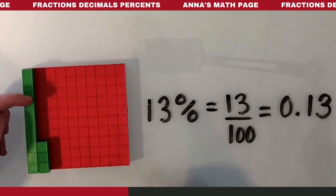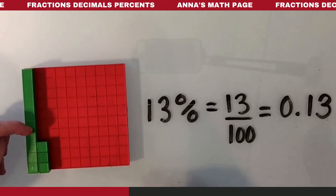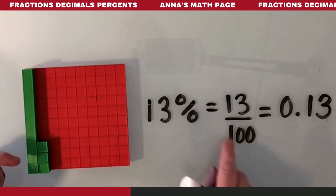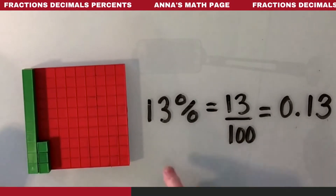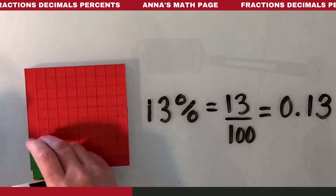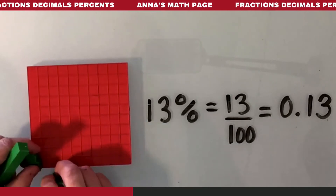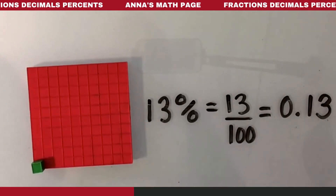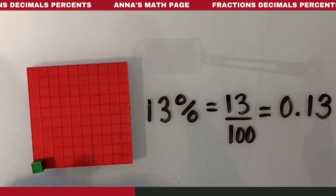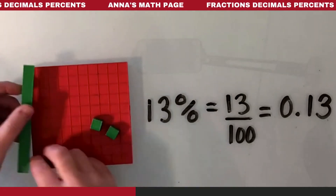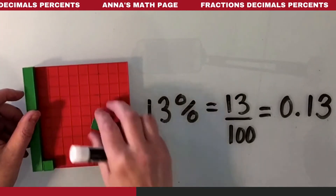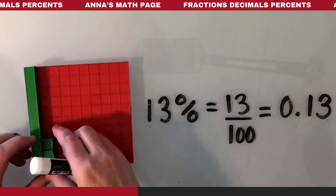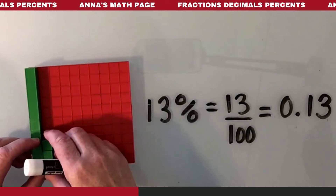Then for 13 hundredths, we can change the color again to green. So now we have 13 of the green squares — counting 1 through 13 — which are the hundredths. Each of these little green squares is one out of 100, and we have 13 out of 100: 13 of 100 equal parts.